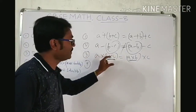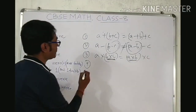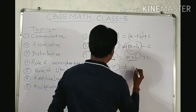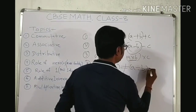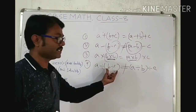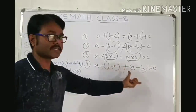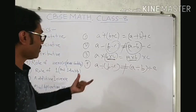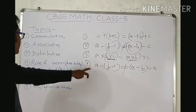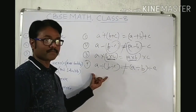Last one is division. A divided by (B divided by C) is not equal to (A divided by B) divided by C. If you take three rational numbers and change the grouping, the value is not the same. Division is not associative for rational numbers.